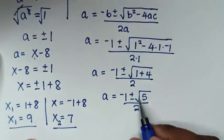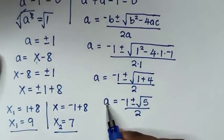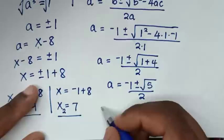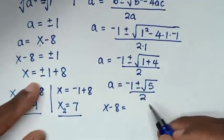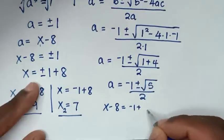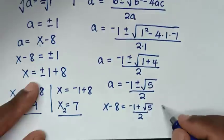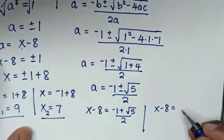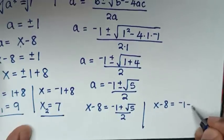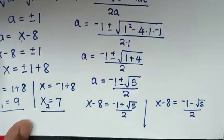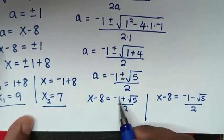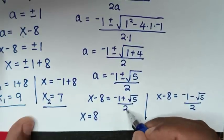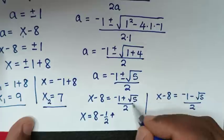So it will be a equals negative 1 plus or minus square root of 1 plus 4, which is square root of 5, over 2. We have two solutions because of plus or minus. Our a is x minus 8, so we substitute: when positive, x minus 8 equals negative 1 plus square root of 5 over 2. When negative, x minus 8 equals negative 1 minus square root of 5 over 2.